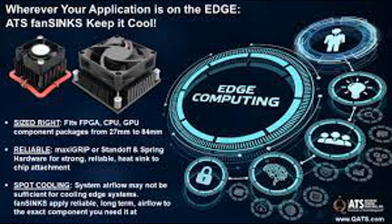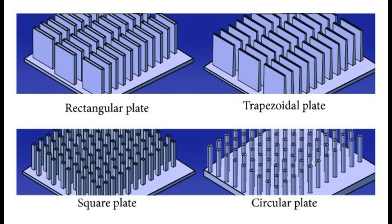Heat dissipation also relies on the thermal conductivity of the heat sink material. Materials with high thermal conductivity, such as copper or aluminum, facilitate the transfer of heat more efficiently, allowing it to dissipate into the surrounding environment more quickly. Overall, heat dissipation is essential for maintaining the optimal operating temperature of electronic components and preventing overheating. A well-designed heat sink effectively removes heat from electronic devices, ensuring their reliability, longevity, and performance.